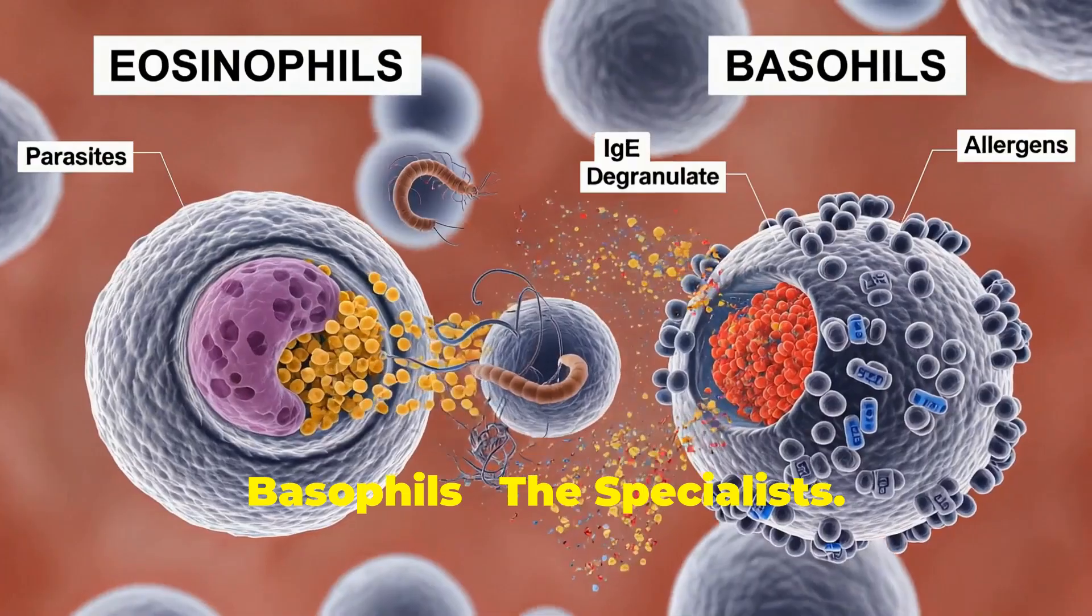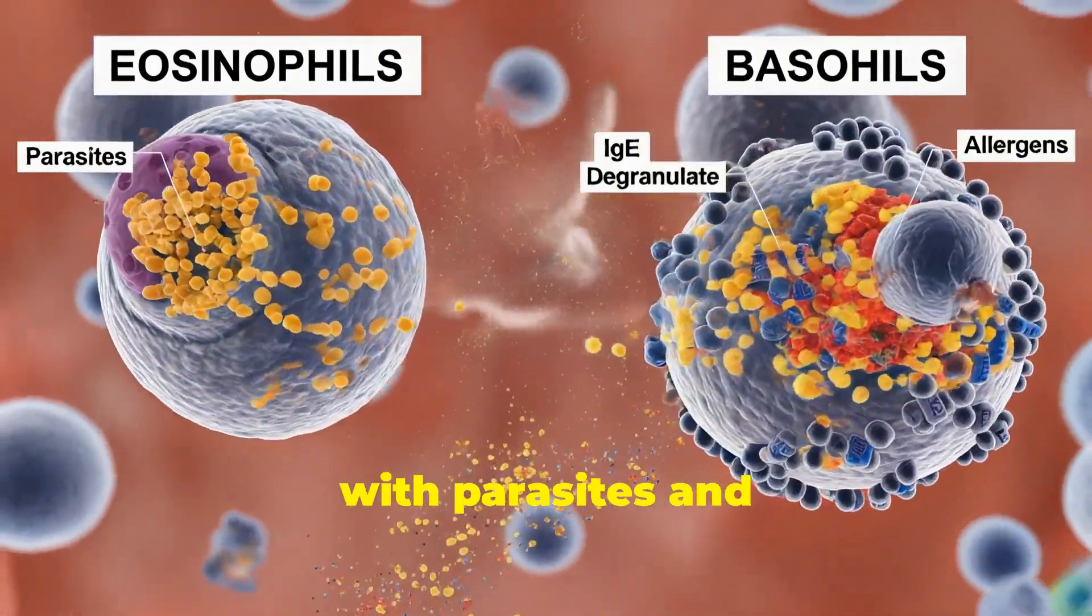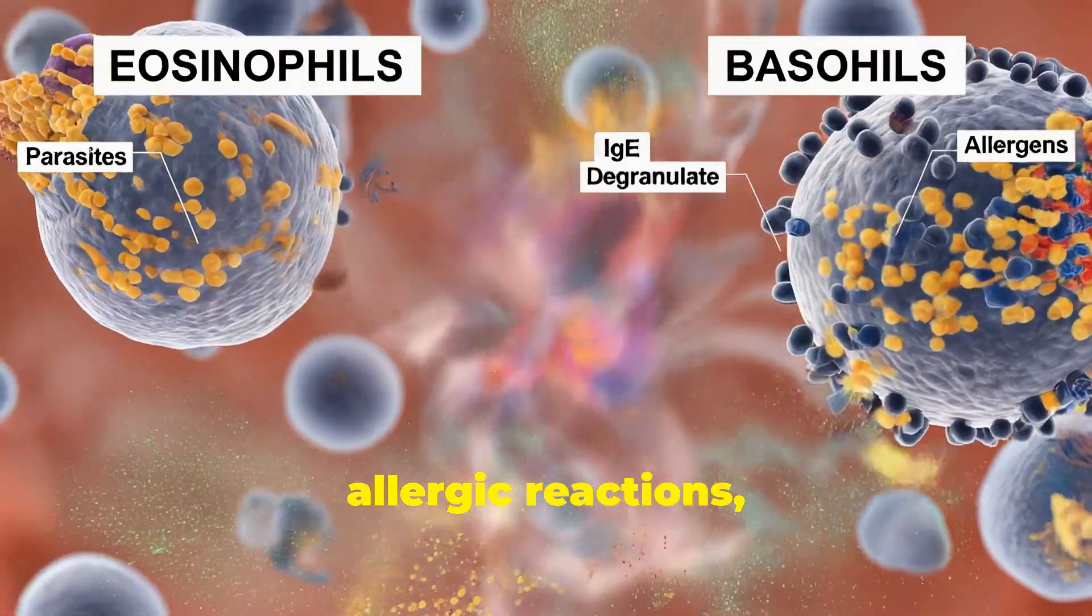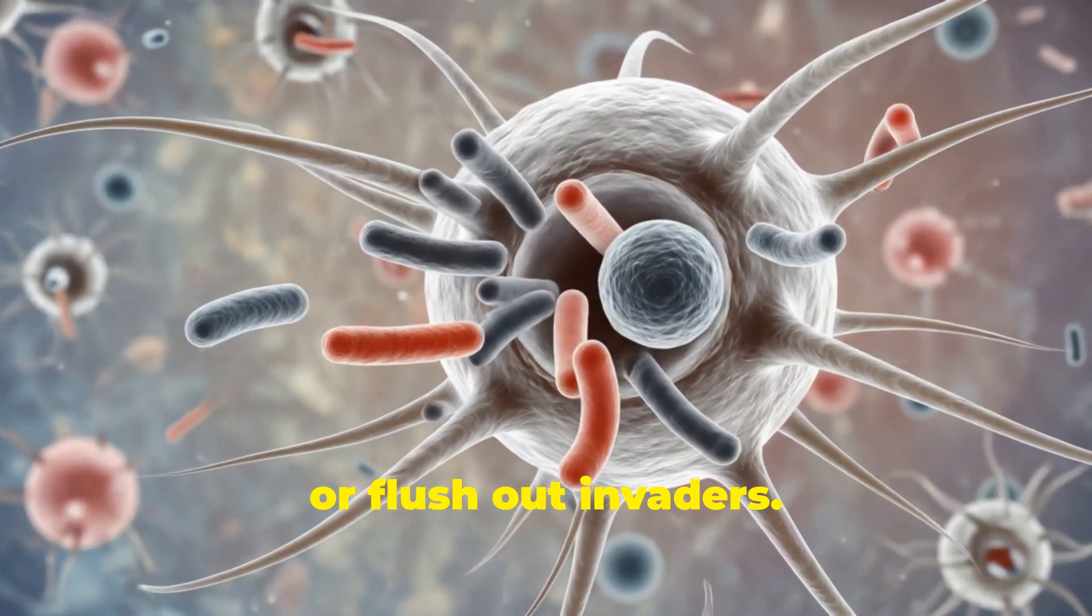Eosinophils and basophils, the specialists. These rare white blood cells deal with parasites and allergic reactions, releasing chemicals like histamine to control inflammation or flush out invaders.